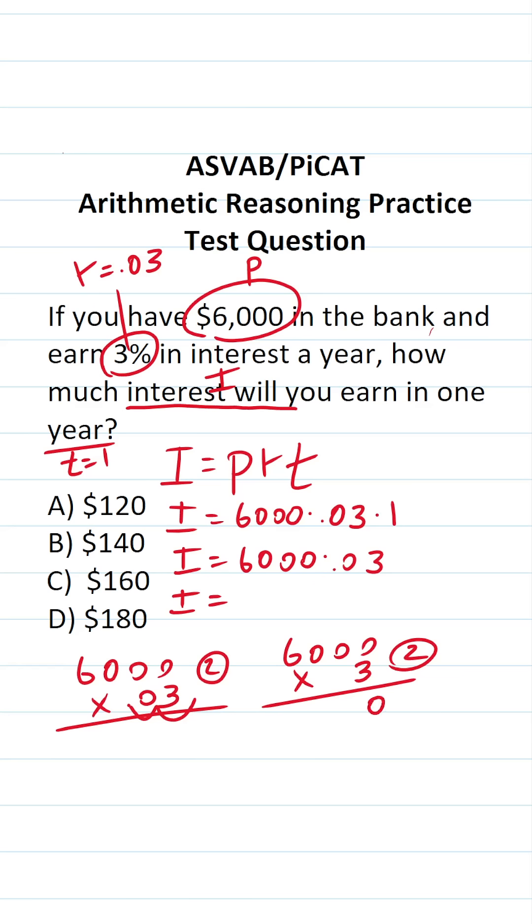0 times 3 is 0, 0 times 3 is 0, 0 times 3 is 0. 6 times 3 is 18. Bring our two decimals back in.